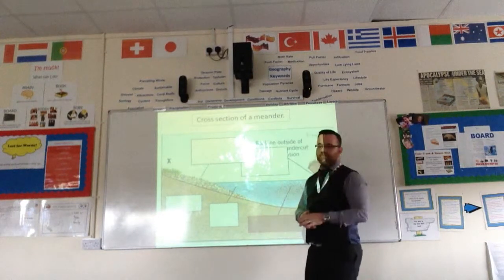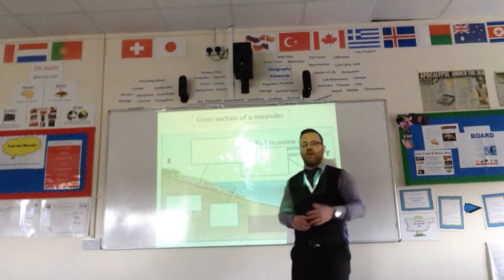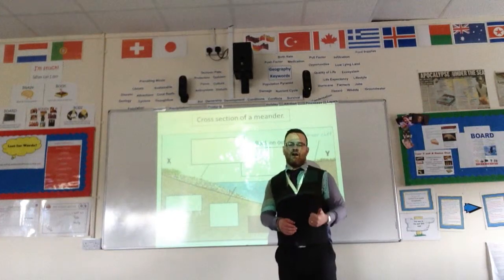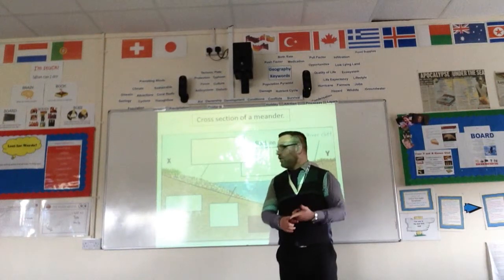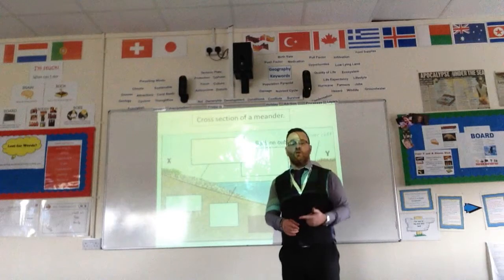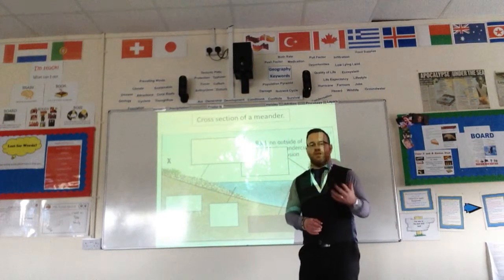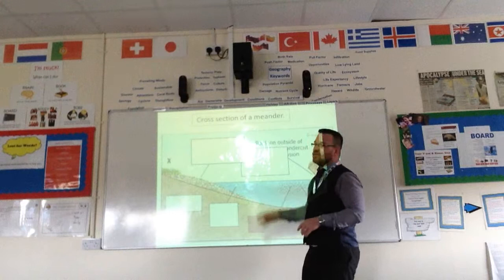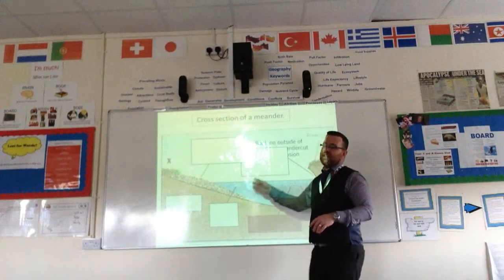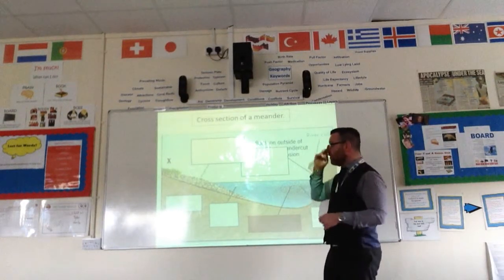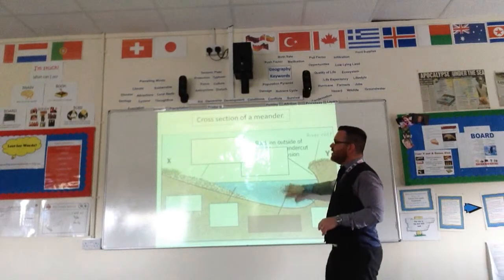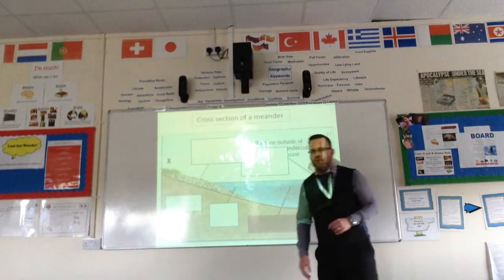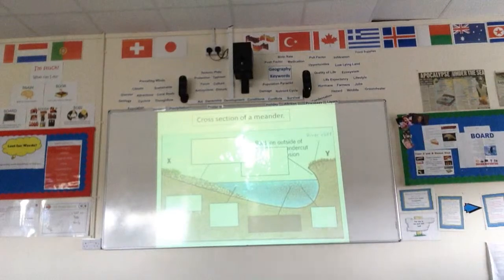So three main landforms that you can look at: V-shaped valleys, waterfalls — that's always a very popular one because everyone understands how waterfalls are created — and if it's about the lower course, or it's asking for a river feature in the lower course and how it changes over time, then meander is your one to go for. You can use the river sheets in the PowerPoint to look back over those. Thank you.